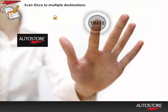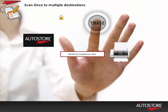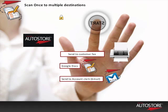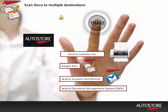Scan once to multiple destinations. For example, send a scanned document to a customer by fax, a personal searchable PDF into Google Docs, a notification to the account clerk via Gmail, and a proper copy for your organization's document management system — all of that in merely one step. Whatever document workflow you need to automate, from very basic to very complex, AutoStore will allow you to aggregate multiple steps into just a few, all in merely a touch.